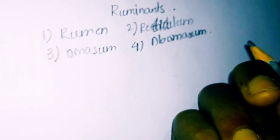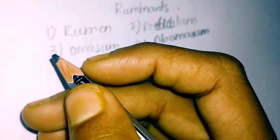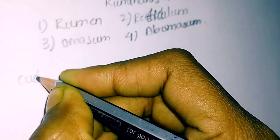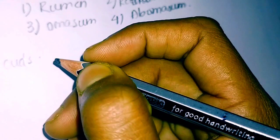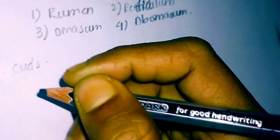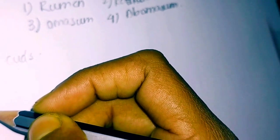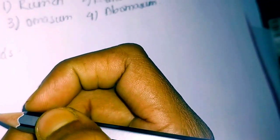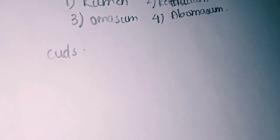Large pieces of plant material float on top of the fluid in the rumen and are passed into the reticulum, where it gets converted into small or soft balls called curds. The reticulum also contains microbes which digest the cellulose partially.